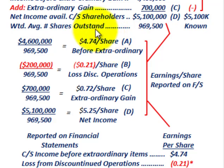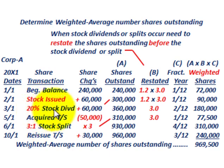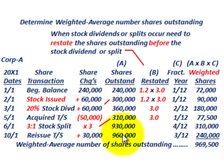Now let's look at how we'd determine the weighted average number of shares outstanding — that 969,500 figure. You look at the share transactions by date, which includes stock issued, stock dividends, and stock splits. You determine the share changes — increases and decreases — to find shares outstanding. Anything prior to a stock dividend or stock split has to be restated. Then you determine the fraction of the year those shares were outstanding based on the transaction dates.